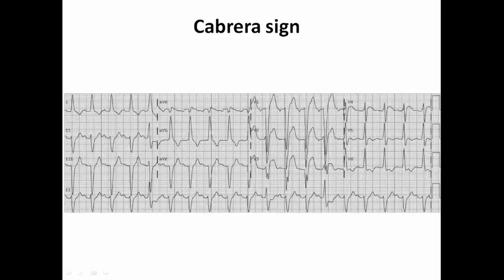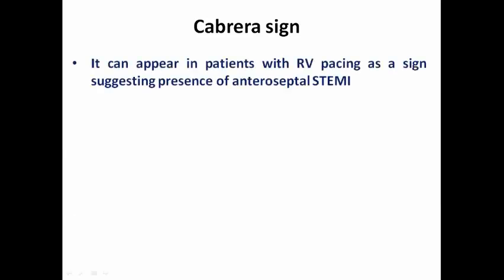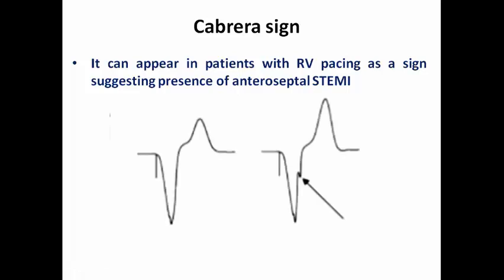Here as well we can see the Cabrera sign — notching in the upslope of the S wave in V2 and V3 — suggestive of ongoing myocardial infarction. It can also appear in patients with RV pacing as a sign suggesting anteroseptal STEMI. So when you see a notch in the upslope of the S wave in a patient with a pacemaker presenting with typical chest pain, I would consider this patient as STEMI and arrange coronary angiography.